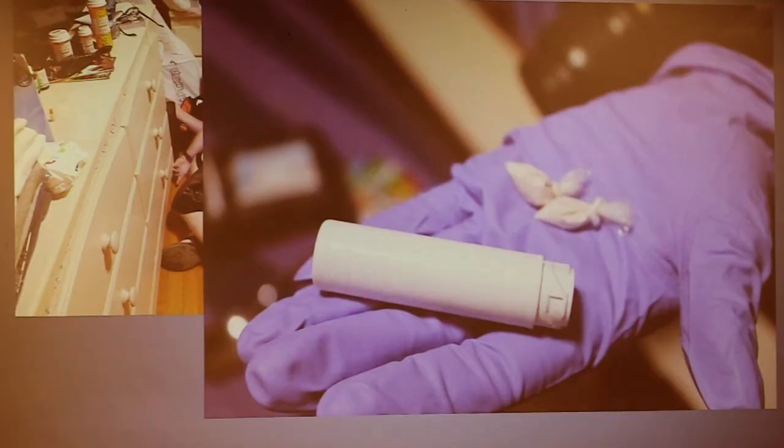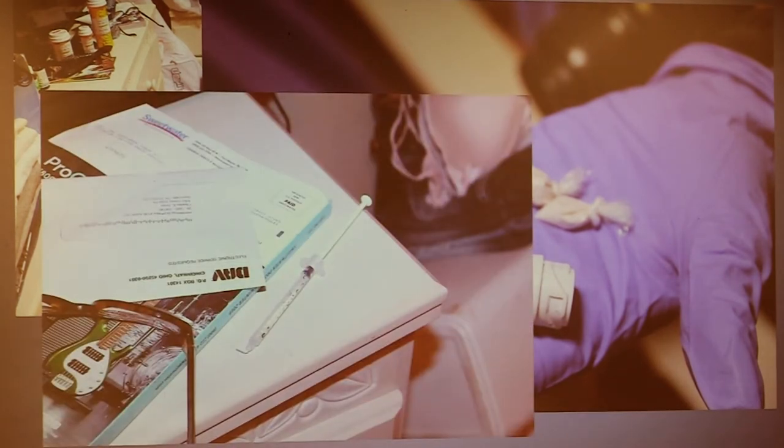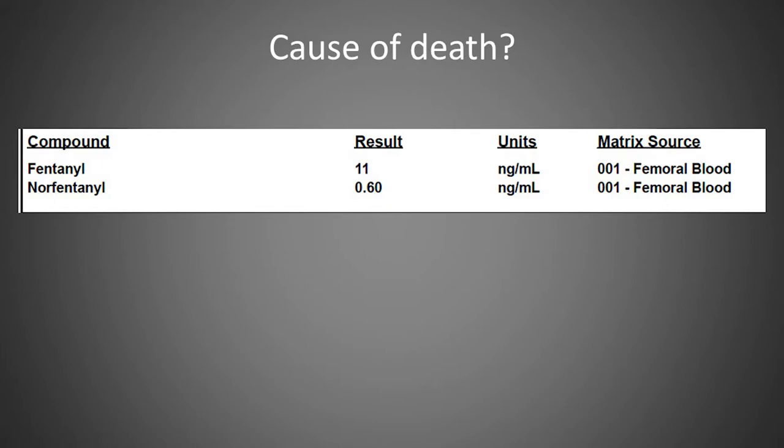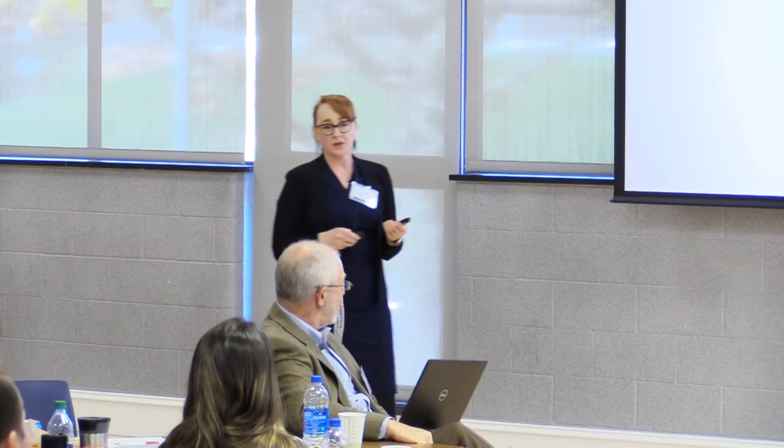Case example: drugs and a loaded syringe at the scene. Autopsy was negative. Toxicology showed fentanyl in femoral blood and norefentanyl, which is just the metabolite — what your body turns fentanyl into. What's her cause of death? Somebody said 'accident' — but accident is a manner of death, not a cause of death. The cause of death is acute fentanyl overdose. The autopsy is negative, we know what's at the scene, she has a history of drug use. We don't get these clean single-drug cases very often.